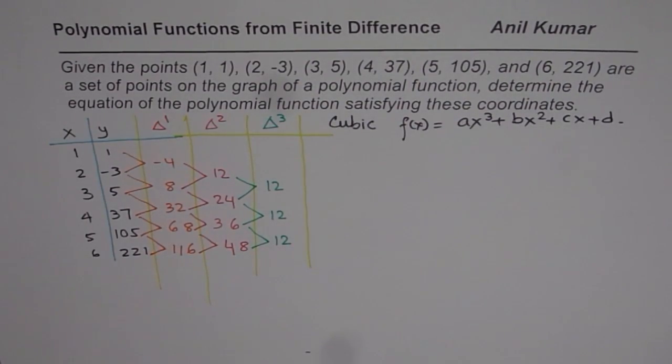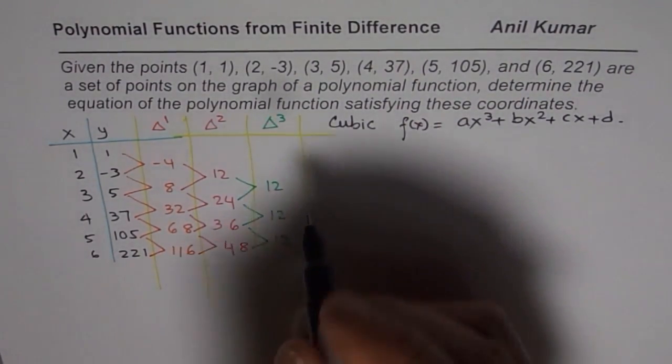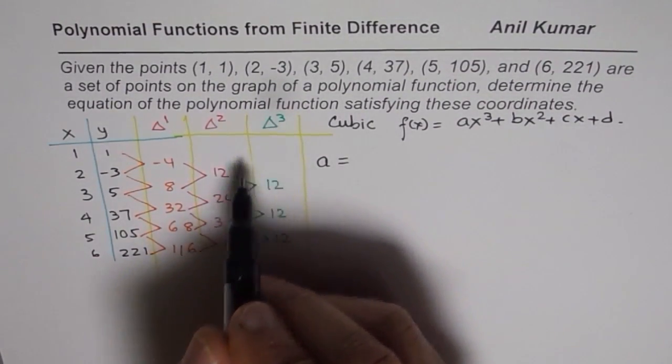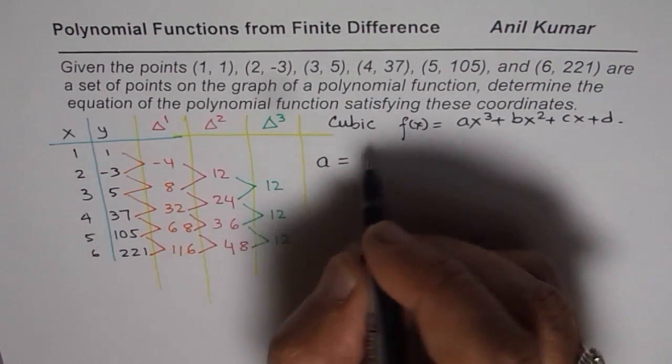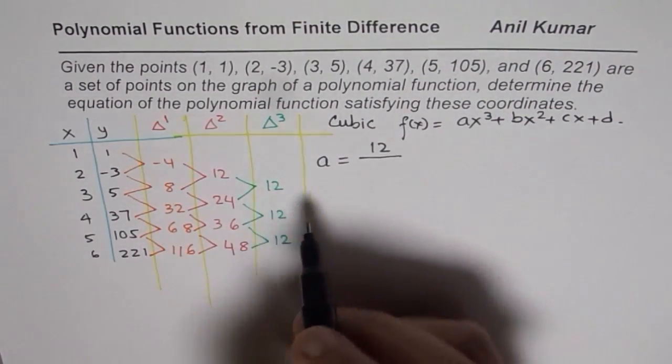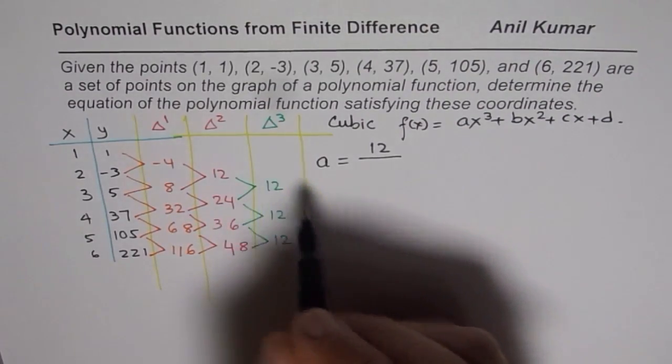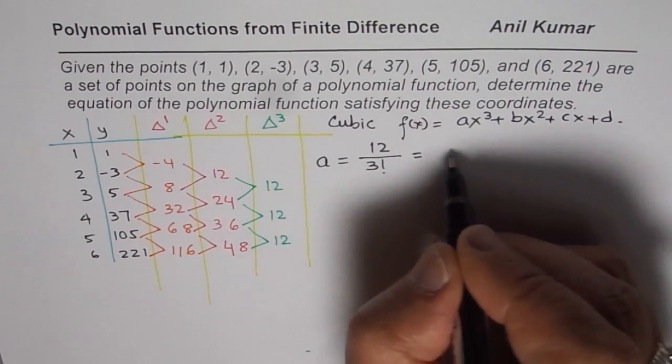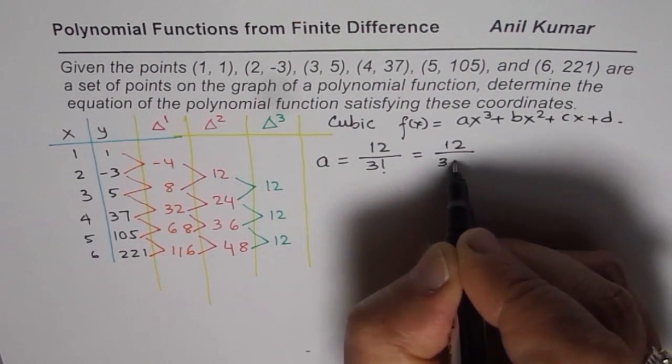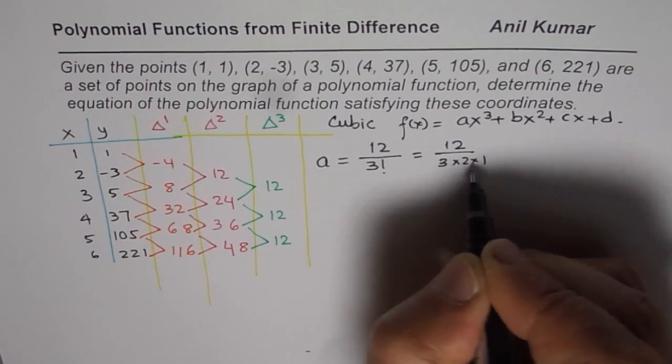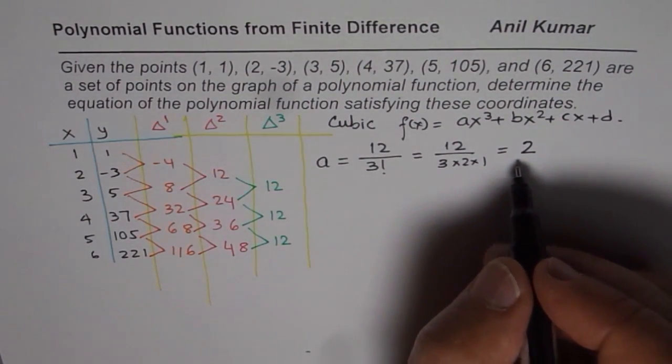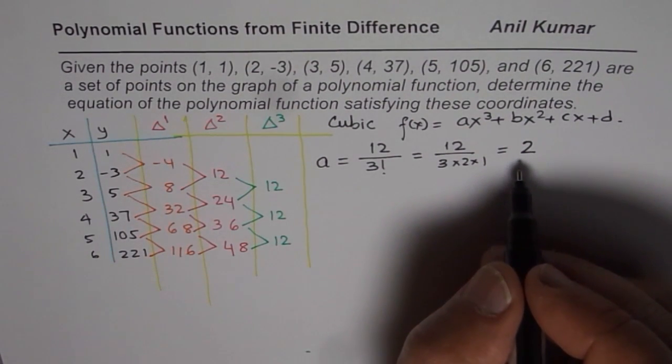Now how do we find a, b, c and d? Well to find a, we do have a formula as we discussed. A equals the constant finite difference of 12 divided by, since this is third finite difference, divided by 3 factorial. And the meaning of 3 factorial is 3 times 2 times 1. So it is 12 divided by 6, which is 2. So we get the value of a as 2.